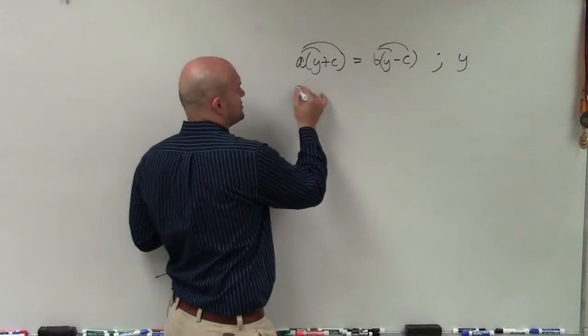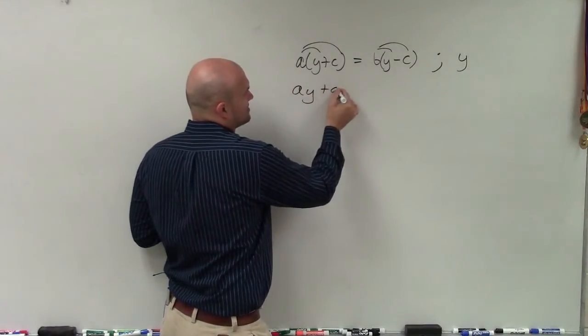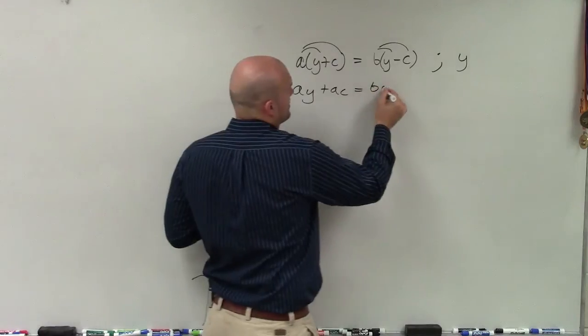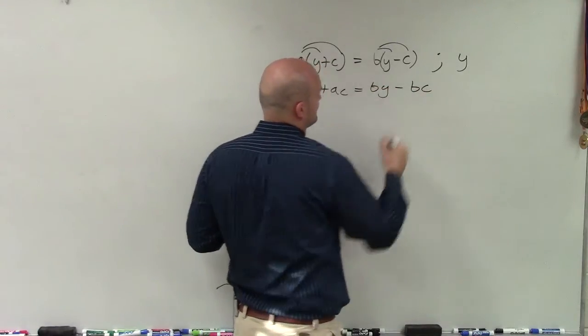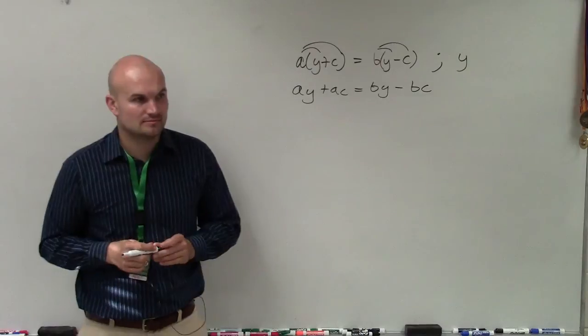So I apply a distributed property. We're going to get ay plus ac equals by minus bc. Does everybody follow me with that? All right.